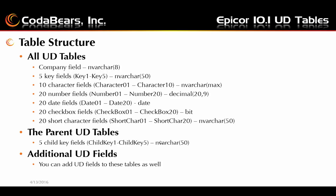There are 20 short character fields, short char 01 to short char 20, and those are VarChar 50. The only tables that are different are the parent UD tables — they have an additional 5 key fields called child key 1 through child key 5, also VarChar 50, which match up with the key fields in their associated child tables. You can also add additional UD fields to these tables if you need more.